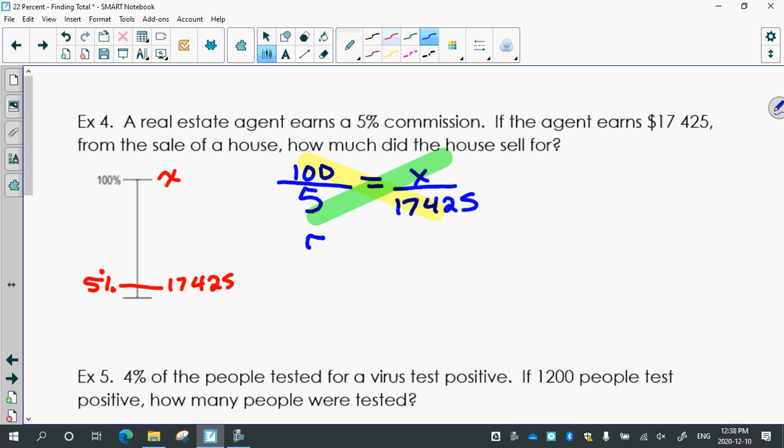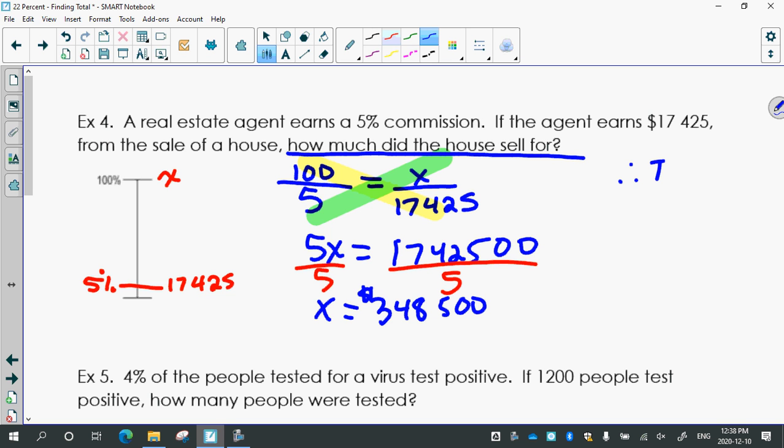So if you do 5 times x, you get 5x. 100 times 17,425 is going to be... So that is 1,742,500 divided by 5. Make sure you type it in right when there's all those numbers. $348,500.